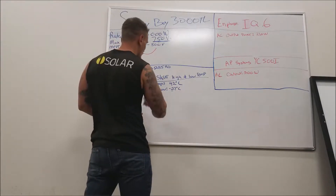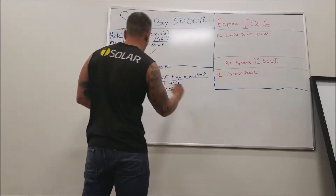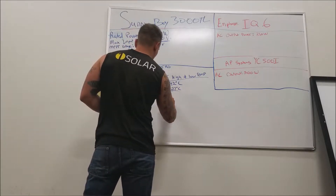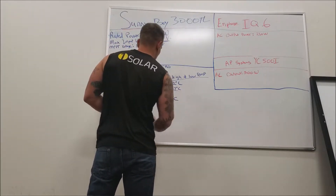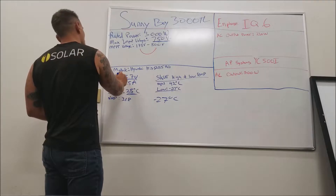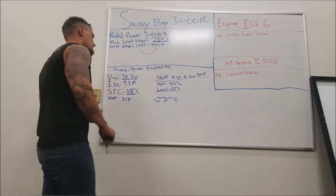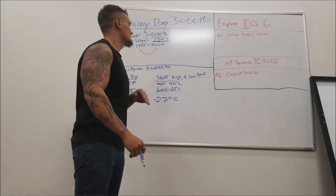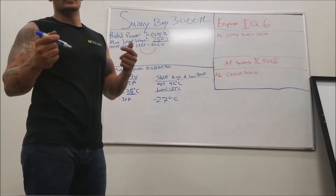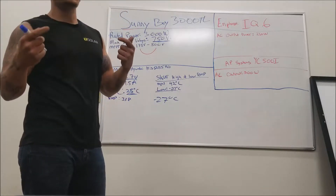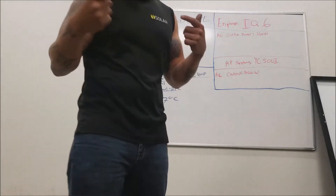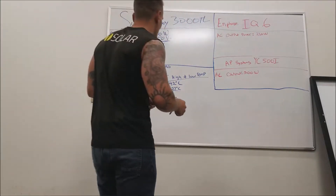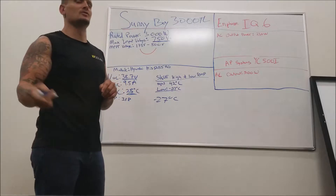We're in Utah, so our lowest temperature — which is going to increase our voltage — is negative 27 degrees Celsius. We want to see how that changes our VOC so we can figure out how many panels we can put in a string without exceeding 750 volts. We go to the NEC code book, 690.7A, which tells us what correction factors we need to use.